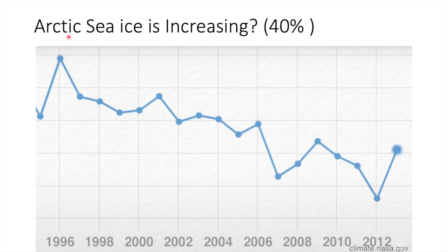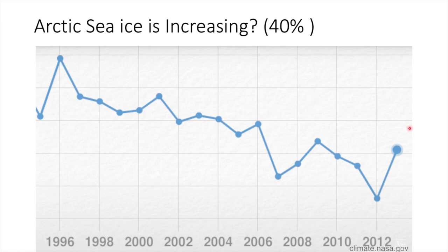Some scientists argue that Arctic sea ice is increasing 40% in recent years. We can see there is an increase, but the overall trend of the curve is almost decreasing. On the NASA website you can see the animation of how Arctic sea ice is changing over years — it's almost decreasing. Sometimes we have some up and down variation because of solar cycles, but that is not affected by man-made activities.